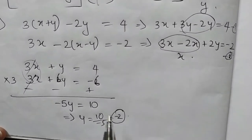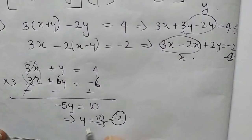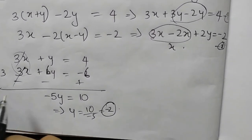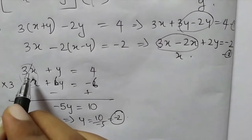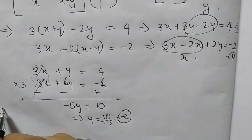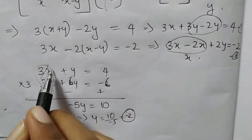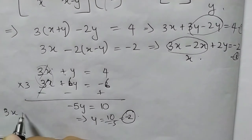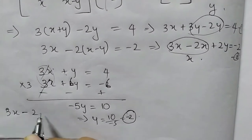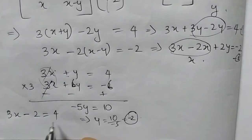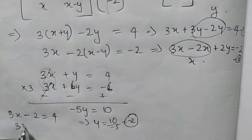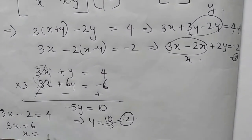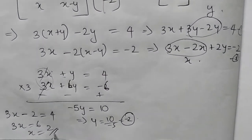With y equal to minus 2, substituting back: 3x minus 2 equals 4, so 3x equals 6, giving x equals 2.